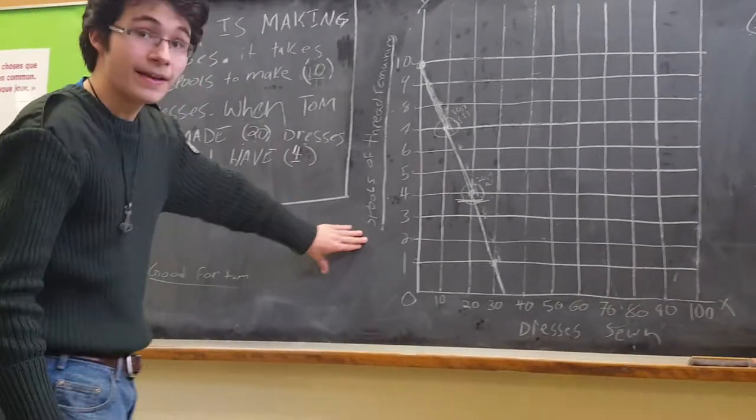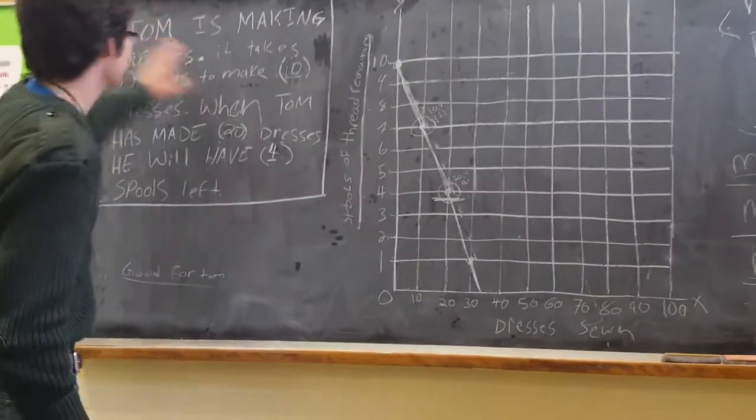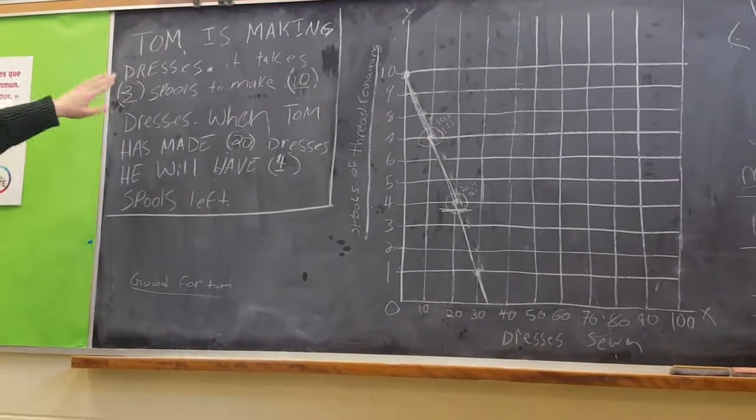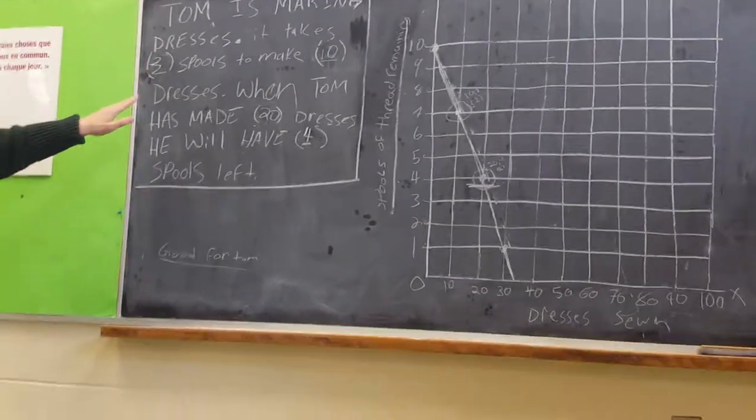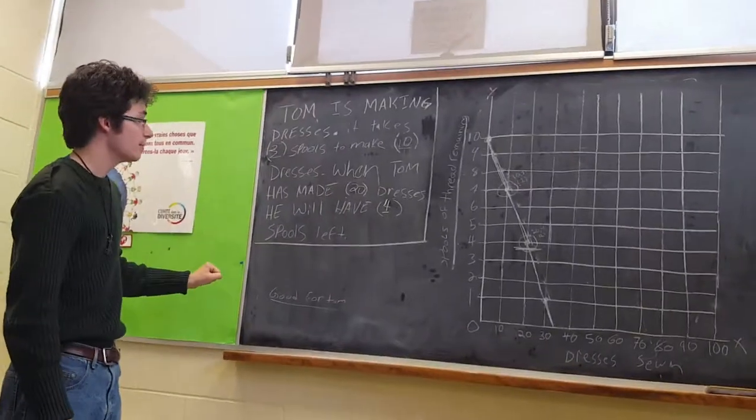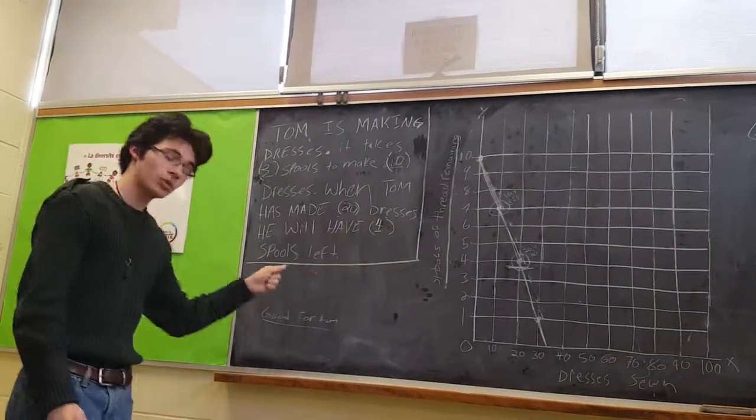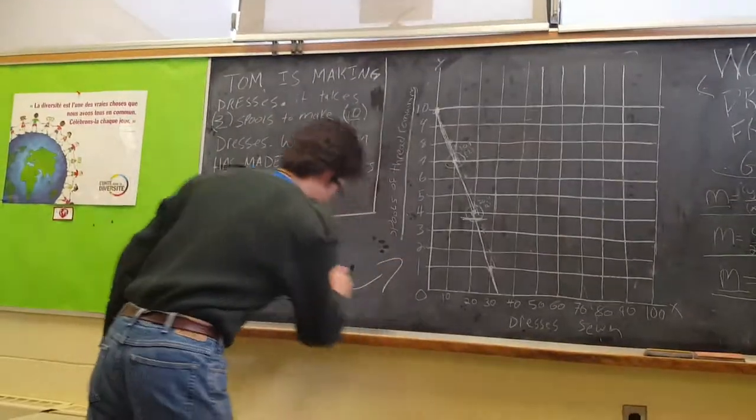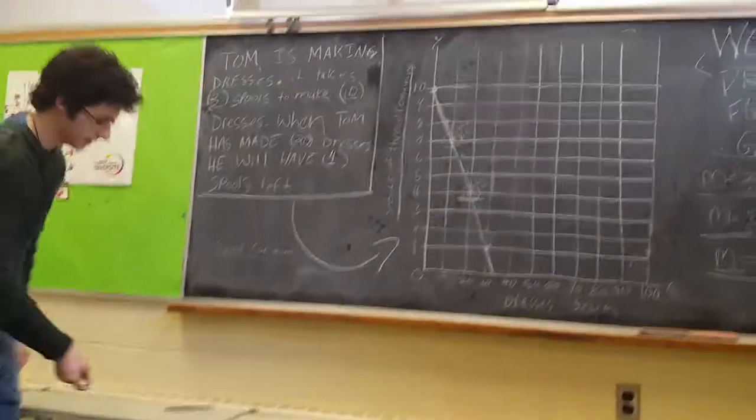So from this graph, and just that little amount of information, we now have a whole description of the graph. Which is, Tom is making dresses. It takes 3 spools to make 10 dresses. When Tom has made 20 dresses, he will have 4 spools left. And that is enough to describe to a reader this graph. And thank you for listening.